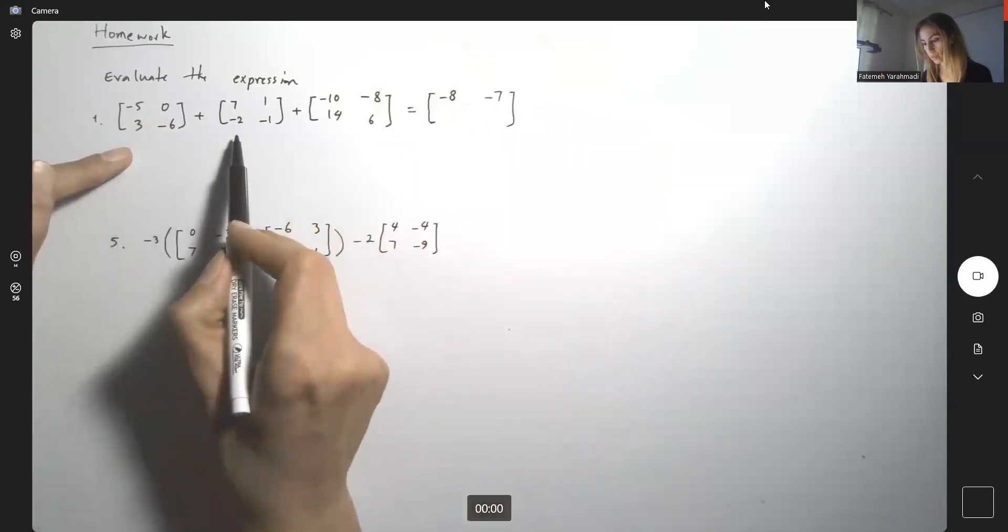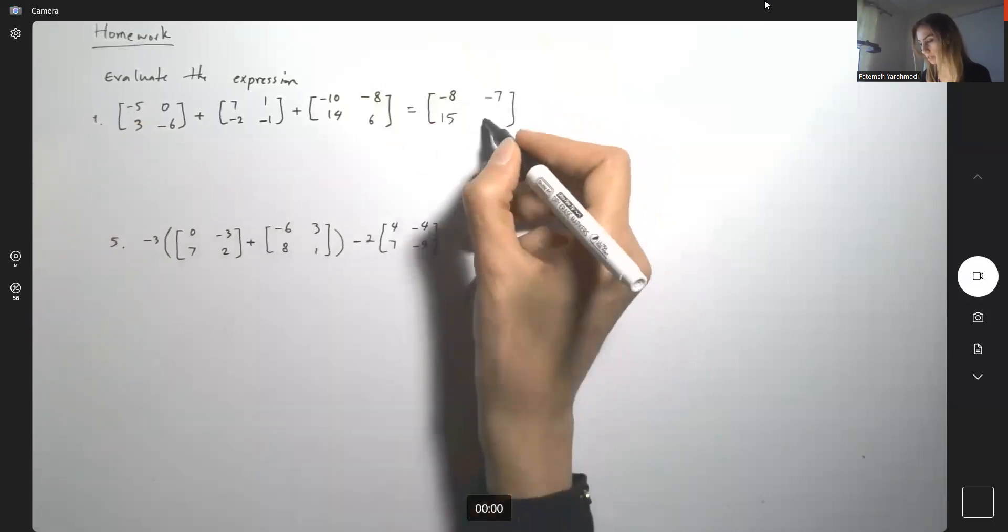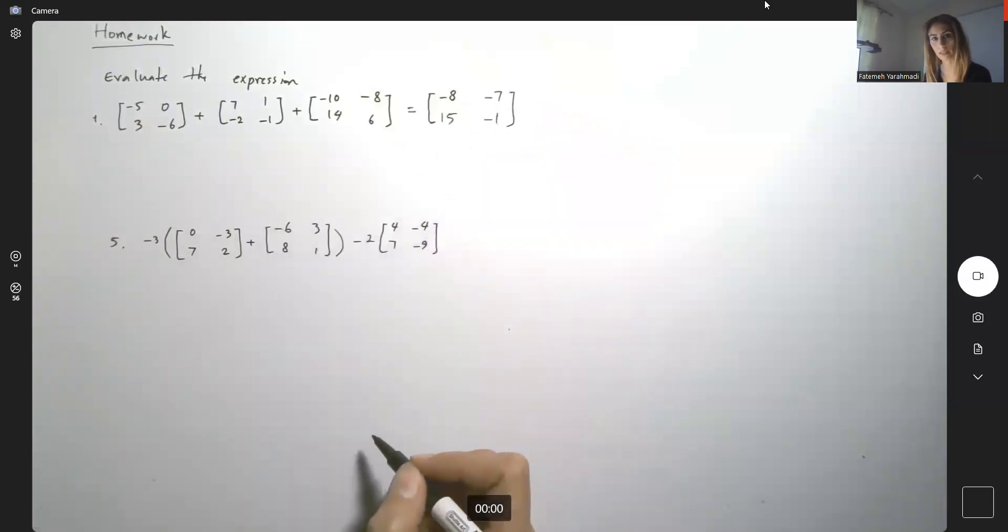Then you have 3 minus 2, 1, 15. And then here you have negative 7 plus 6, negative 1. As easy as that.